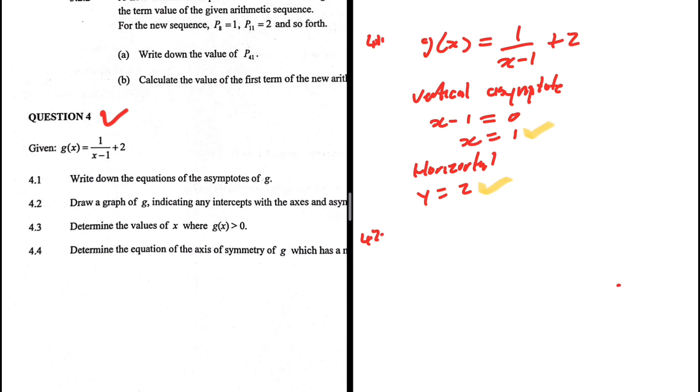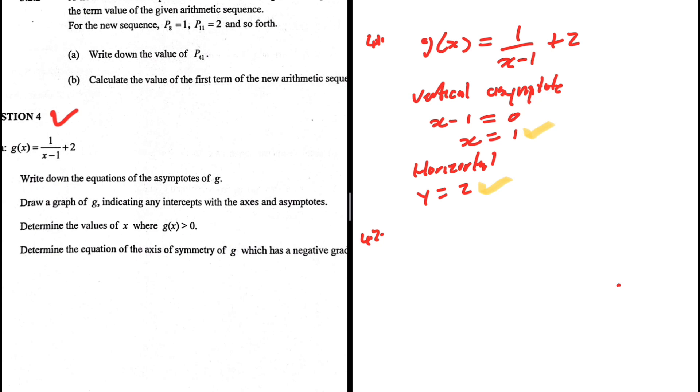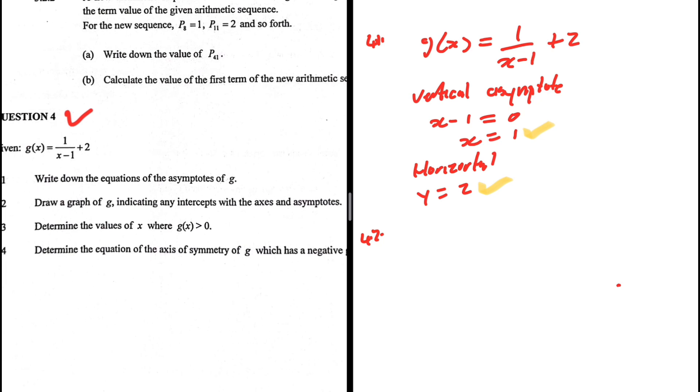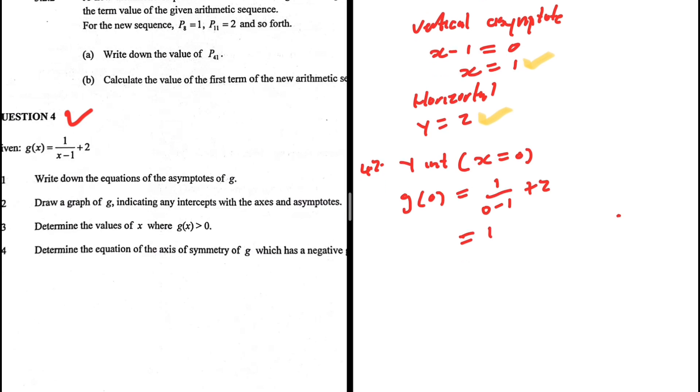4.2, draw a graph of g indicating any intercepts with the axis and asymptotes. We need to draw this graph. We already have the asymptotes. We just need the intercepts now. Let's start with the y intercept. So y intercept, we know that x is equals to 0. So we're going to have g of 0 being equals to 1 divided by 0 minus 1 plus 2. So 1 divided by minus 1, that is minus 1 plus 2 is positive 1. So our y intercept is some coordinate x is 0 and y is 1.